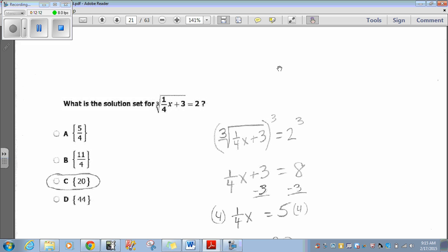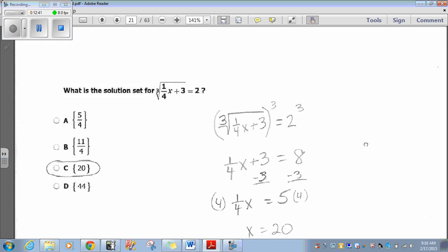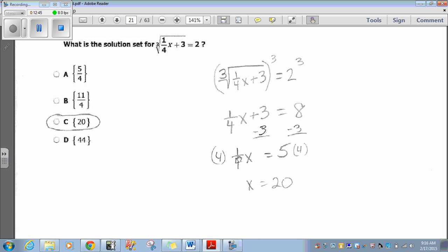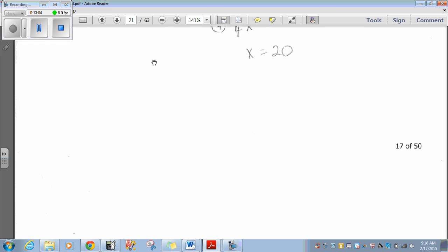Let's go on to question 17. What is the solution set for the cubed root of 1 fourth x plus 3 equals 2? Well, I have a cubed root here. What I want to do is get rid of that radical. So, I'm going to cube both sides of the equation. The cubed root of anything cubed is simply what's under the radical. So, when I cube it, I get 1 fourth x plus 3. I cubed here, 2 cubed, 2 cubed is 8. So, 1 fourth x plus 3 equals 8. I would subtract 3, both sides. I would have 1 fourth x equals 5. And in order to get the x by itself, I'm going to multiply it by the reciprocal of the fraction. So, 1 fourth times 4 is just 1, cancels each other out, just x. 5 times 4 is 20. Boom. Choice C is 20. Easy one. Easy peasy.